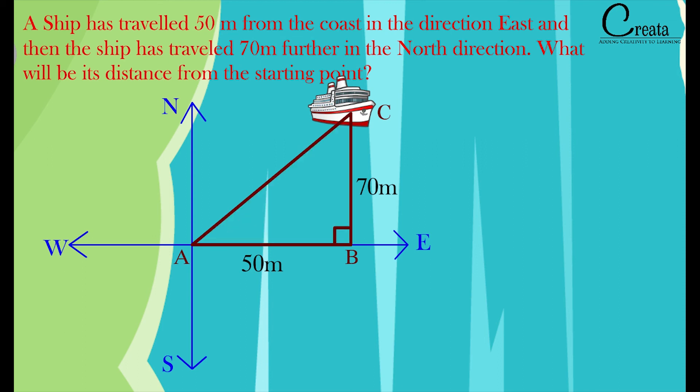This angle B is 90 degrees, giving us right angle triangle ABC. The side opposite to the 90 degree angle is the hypotenuse, so AC is the hypotenuse. Two sides of the triangle, AB and BC, are given, and we need to find the missing side AC.